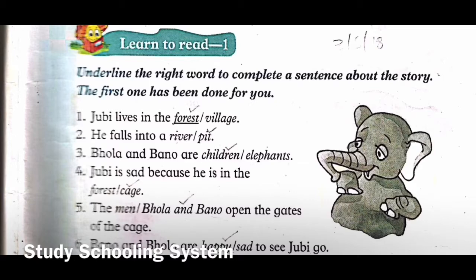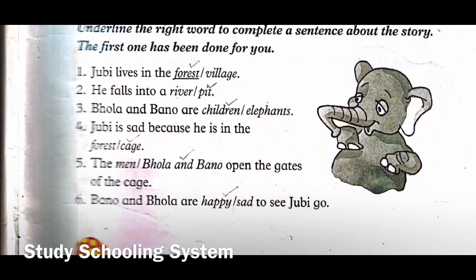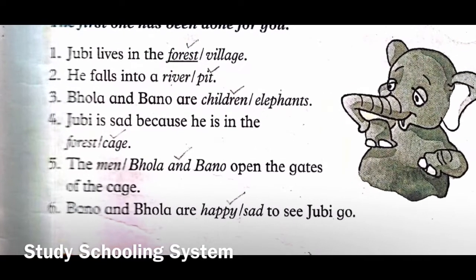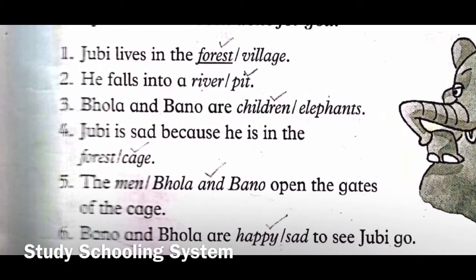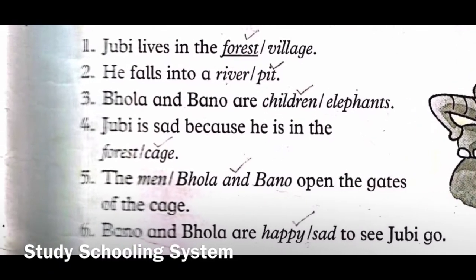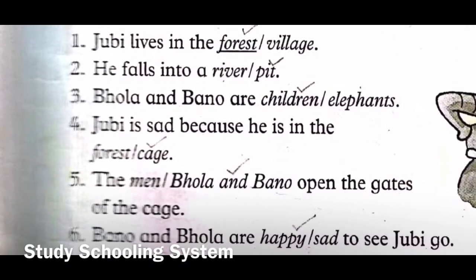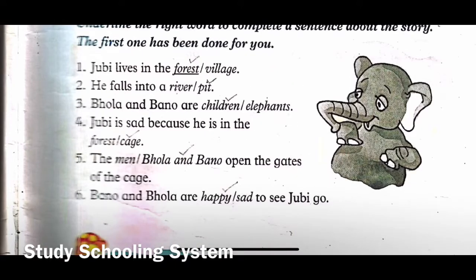Number three: Bholla and Bano are children slash elephants - what are they? They are children. Number four: Jubi is sad because he is in the forest slash cage - yes, he was sad in the cage, so you will underline 'cage.' He was happy when he was in the forest and sad in the cage.